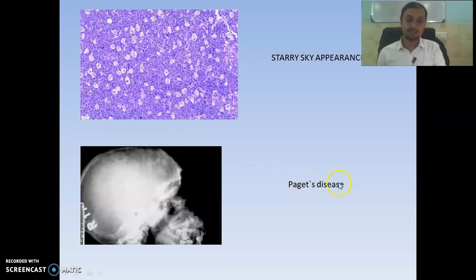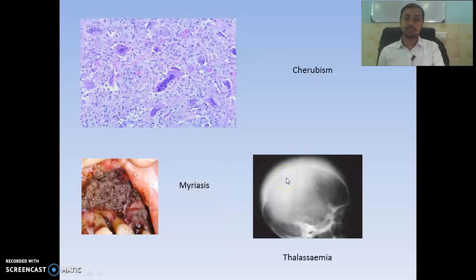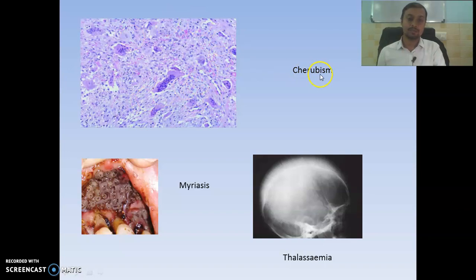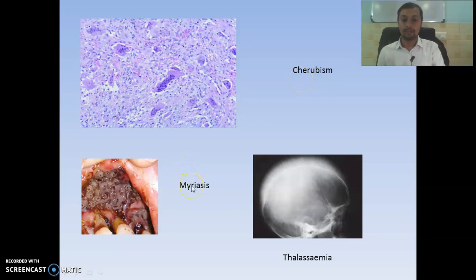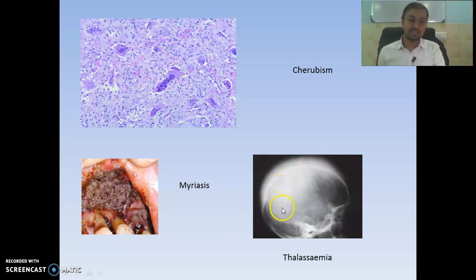Then we have Paget's disease — you can see the cotton wool appearance in the head and neck region. Then we have cherubism, showing multinucleated giant cells surrounded by fibrous stroma. Remember similar features can also be seen in central giant cell granuloma. Then this is myiasis — larvae formation in the oral cavity. You can also see the hair-on-end or crew-cut appearance indicating thalassemia.